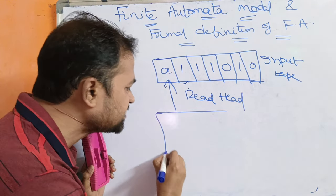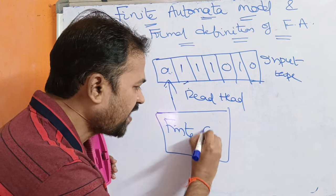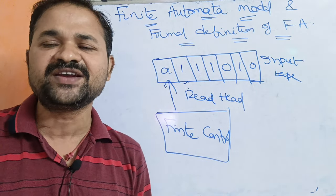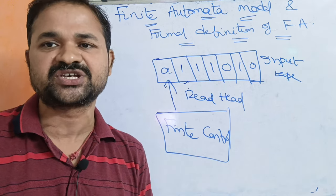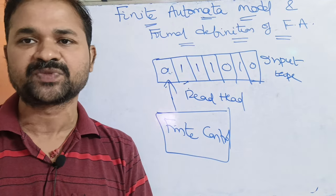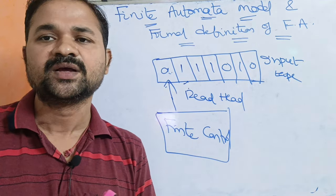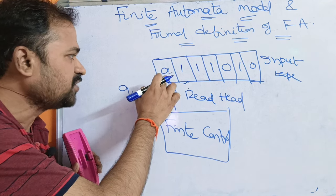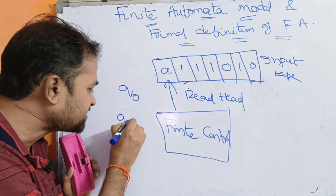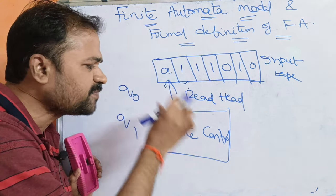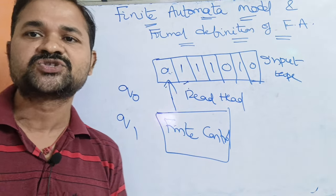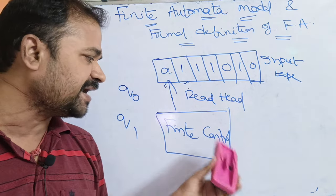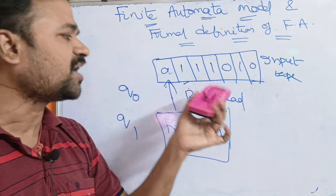The third component is finite control. In the finite control, all the states information will be maintained. Let our transition diagram contain five states — all five states information will be maintained here. We have a current state and some input symbol. Let the current state be Q0 and the input symbol be zero. On applying zero to the current state, we get the next state Q1. Everything is maintained in finite control — on applying an input symbol to the current state, it produces the next state.